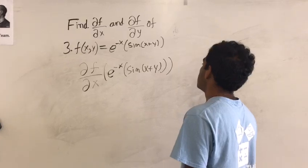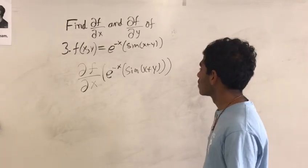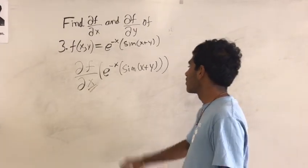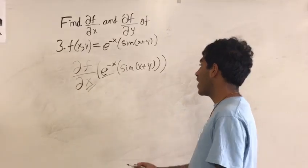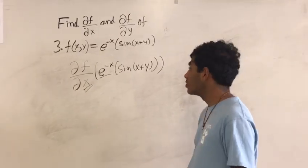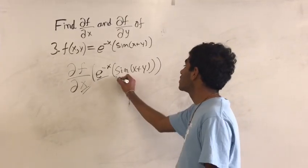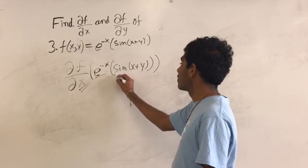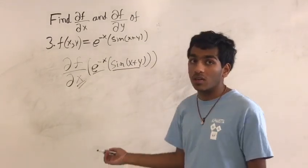So the first thing I've got to do is look at my variable x. My e to the negative x has a variable of x, so we're good. But my sine of x plus y has a variable x as well — we're good there too.